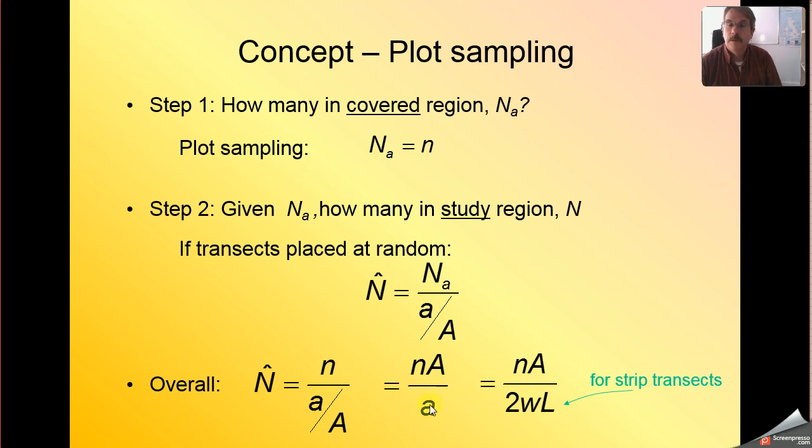What I've done in this final step is I've converted this little a, the size of the region covered by our survey effort, to take into account the geometry of our sampled region. So we had strips that were cap L in length, and they were little w in half width. We multiplied little w by 2 because of expending effort both to the left and to the right of the transect. And that provided us with an estimate of the number of animals in our entire study area if we used this form of plot sampling known as strip transects, in which everything within the boundaries of those plots were detected.